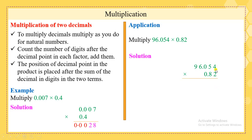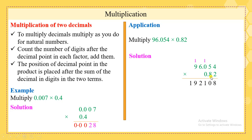Now multiply 2 by all the digits found above: 2 times 4 is 8; 2 times 5 is 10 — put 0 here and 1 above the 0; 2 times 0 is 0, plus 1 is 1; 2 times 6 is 12 — put 2 here and 1 above the 9; 2 times 9 is 18, plus 1 is 19. Now move to the next digit and add a zero.